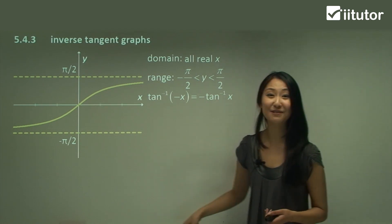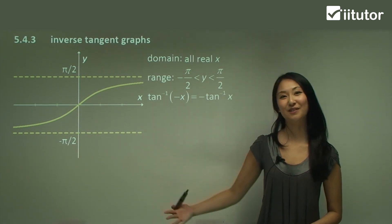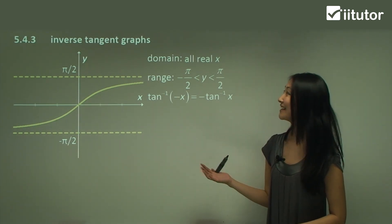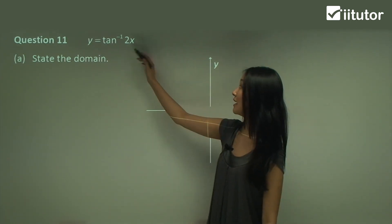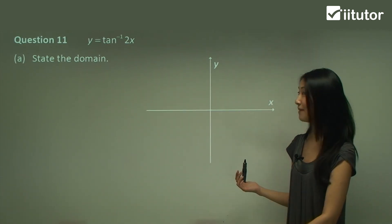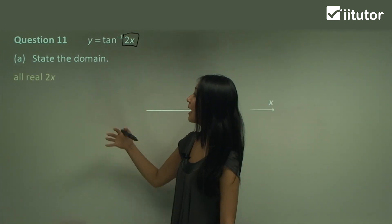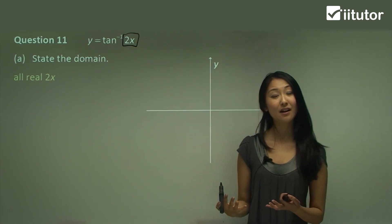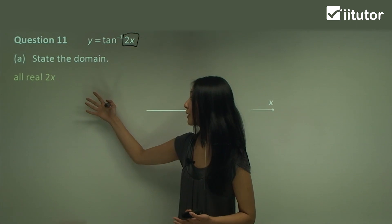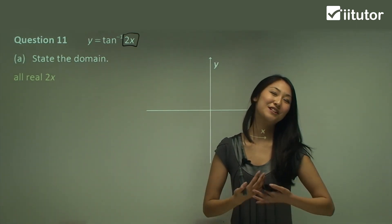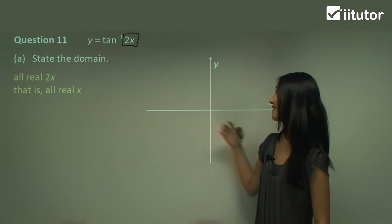Just like with inverse cosine and inverse sine, memorize this before moving on to the questions. Now let's look at some examples. Here we have y equals inverse tan of 2x. To find the domain, we consider our input, which is 2x. The domain of inverse tangent is all real, so 2x can be all real. Dividing through by 2, x is still all real, so the domain is all real x.